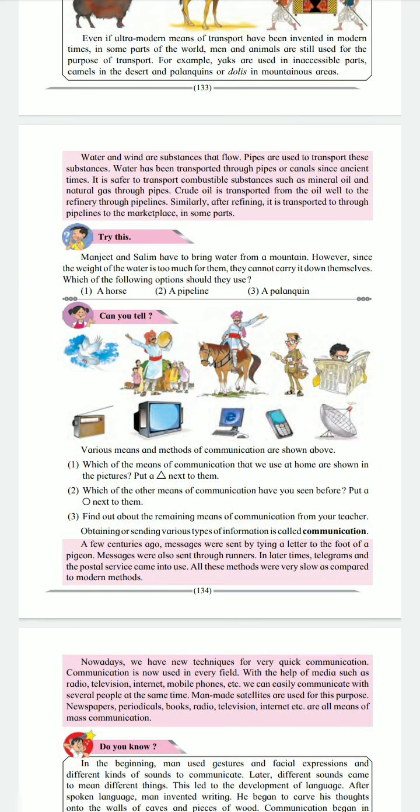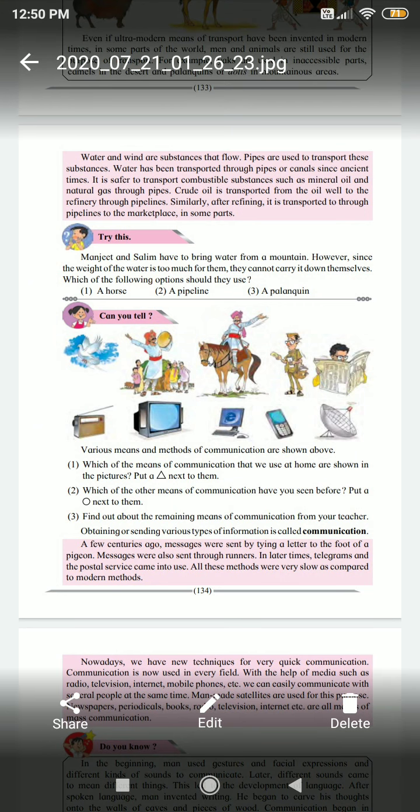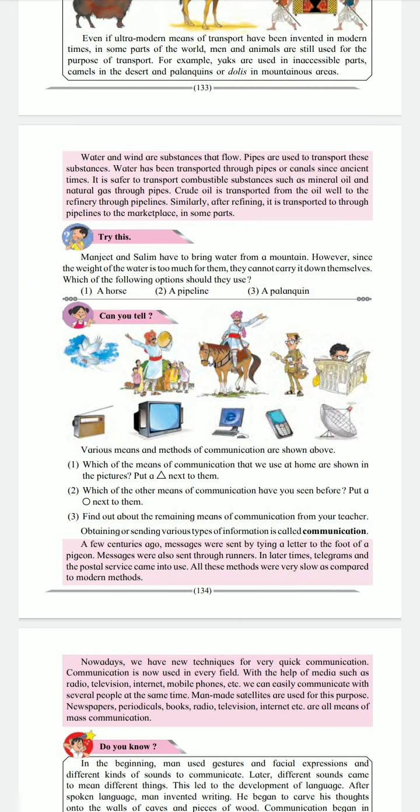Nowadays, we have new techniques for very quick communication. Communication is now used in every field. With the help of media such as radio, television, internet, mobile phones, etc., we can easily communicate with several people at the same time. Artificial satellites are used for this purpose.